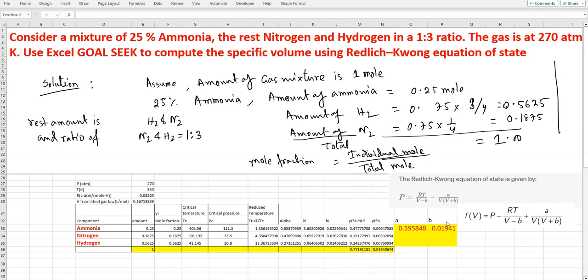Today I'm going to solve a numerical method chemical engineering problem using Excel Goal Seek. The problem considers a mixture of 25% ammonia, with the rest nitrogen and hydrogen in a 1:3 ratio. The gas is at 270 atm and 550 Kelvin.